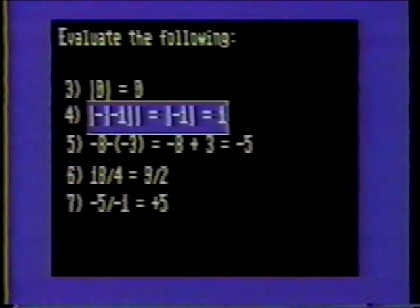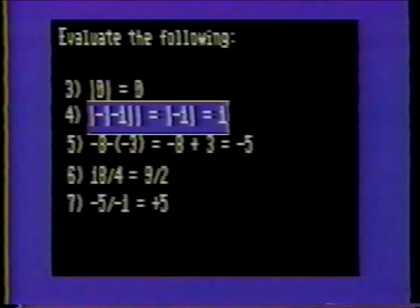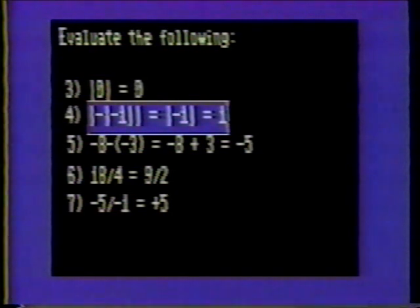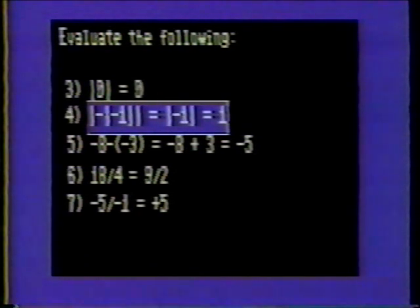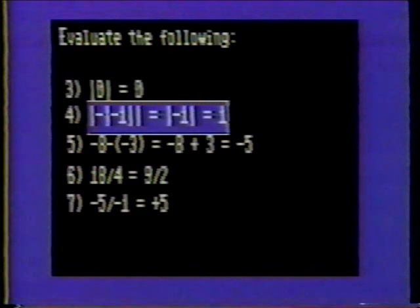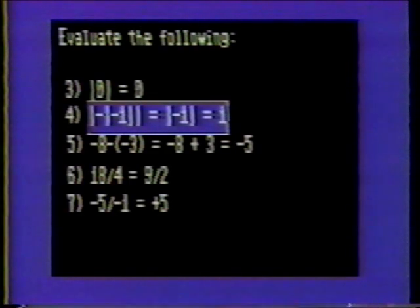Number four: there are two sets of absolute value signs used in this problem. Solve for the innermost items first. The absolute value of negative 1 is positive 1. However, there is another negative sign outside the innermost set of absolute value symbols that alters the sign. Thus, positive 1 becomes negative 1 again. Now we are ready to solve for the item in the outer set of absolute value symbols. The absolute value of negative 1 is positive 1. The final solution is positive 1.